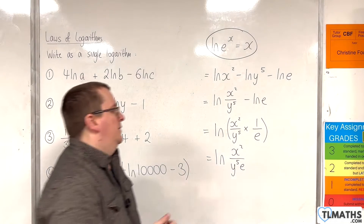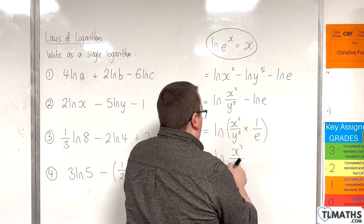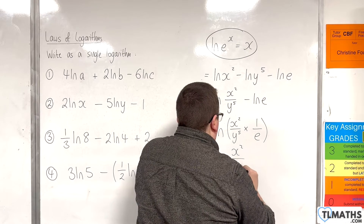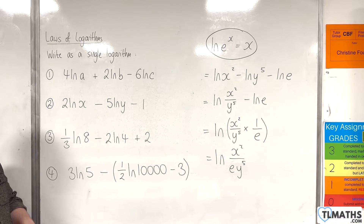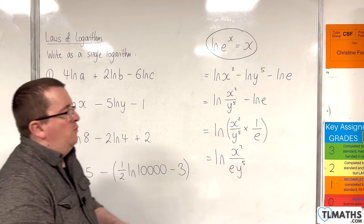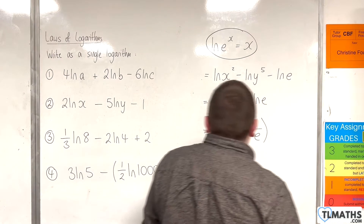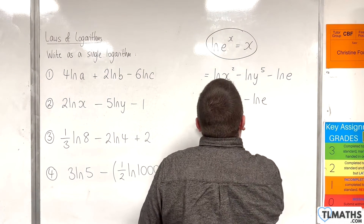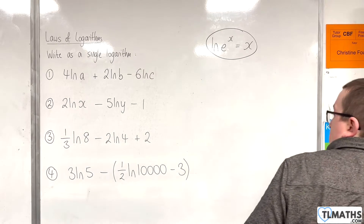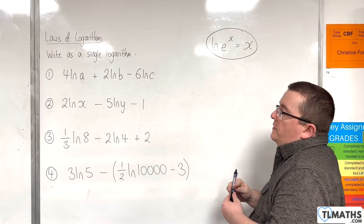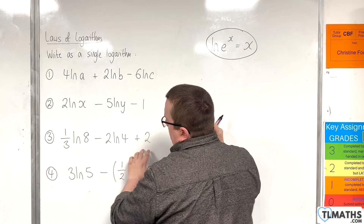So we can write that as the natural log of x squared over e times y to the 5, or equivalently ey to the 5 in the denominator — thinking of e as a coefficient of y to the 5. For the third example, we have 1 third times the natural log of 8, take away 2 times the natural log of 4, plus 2.